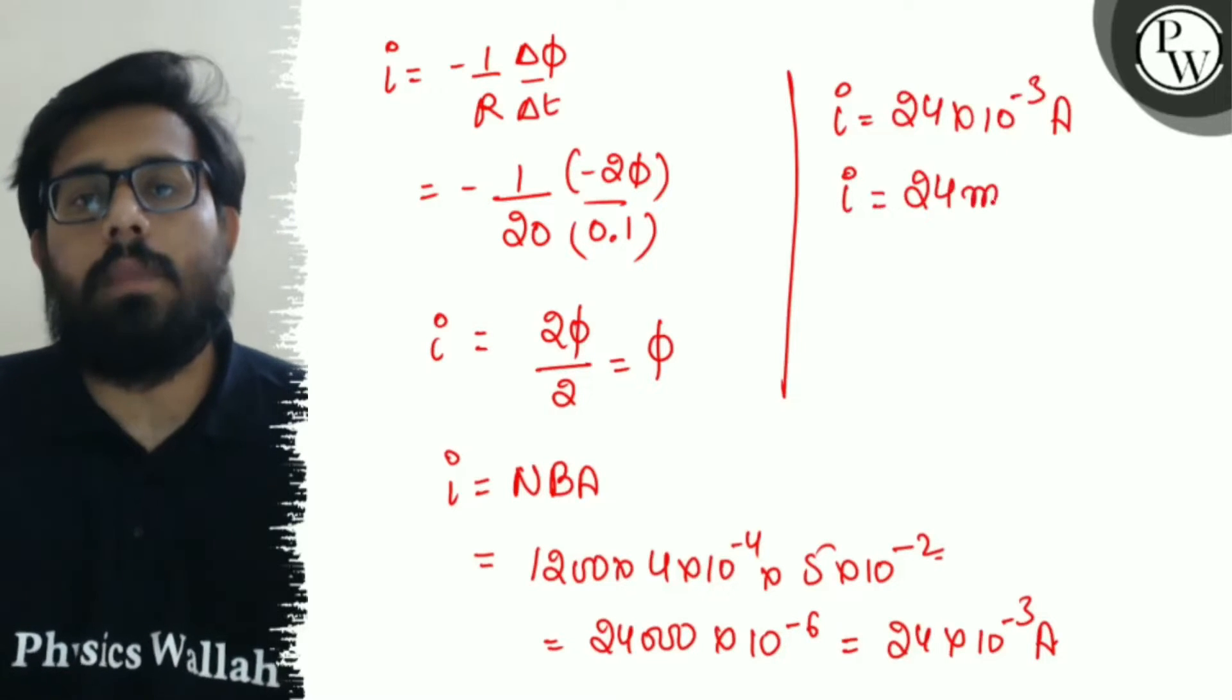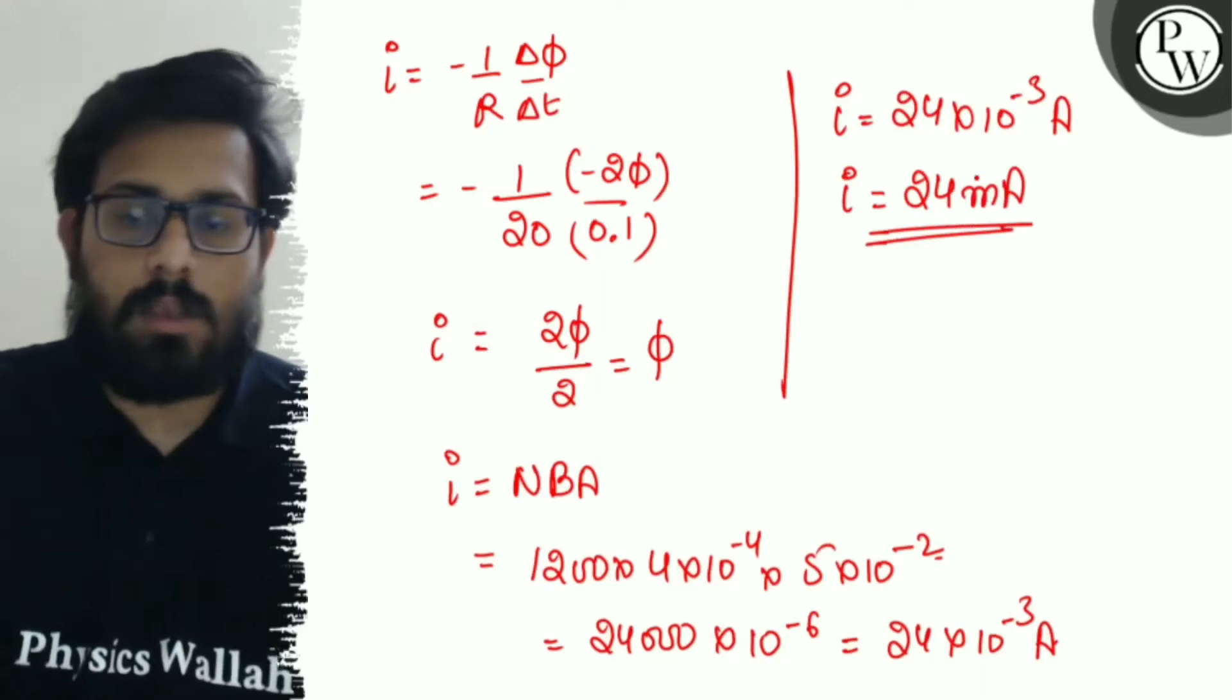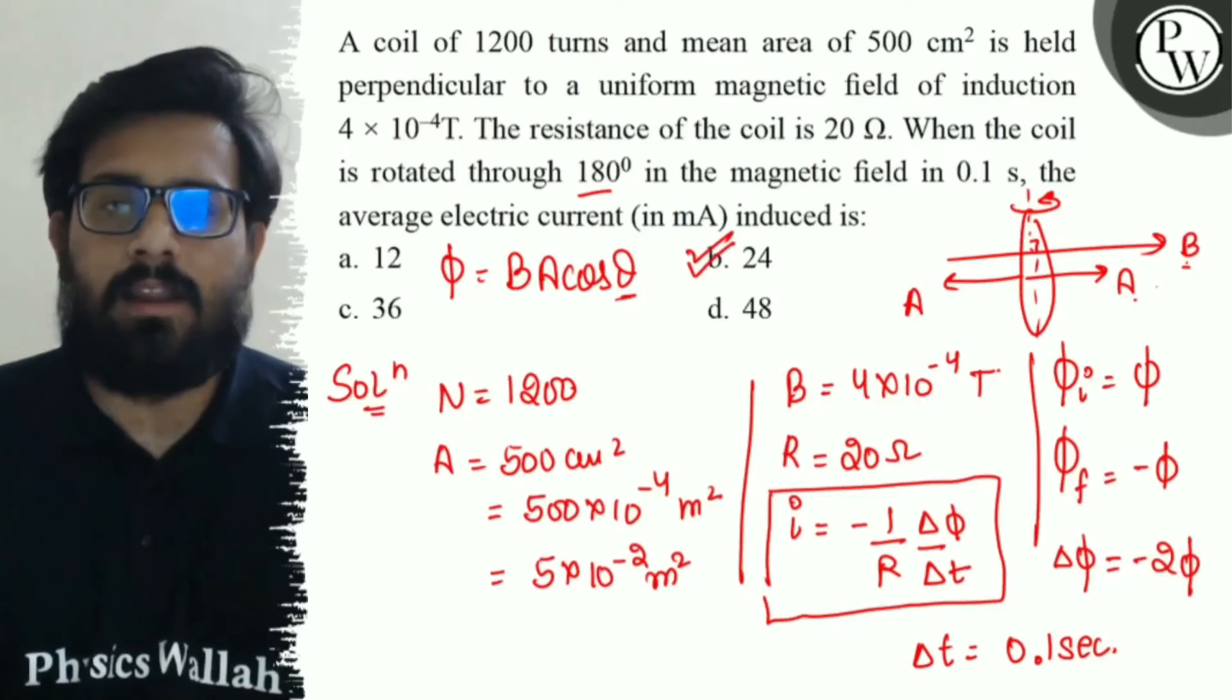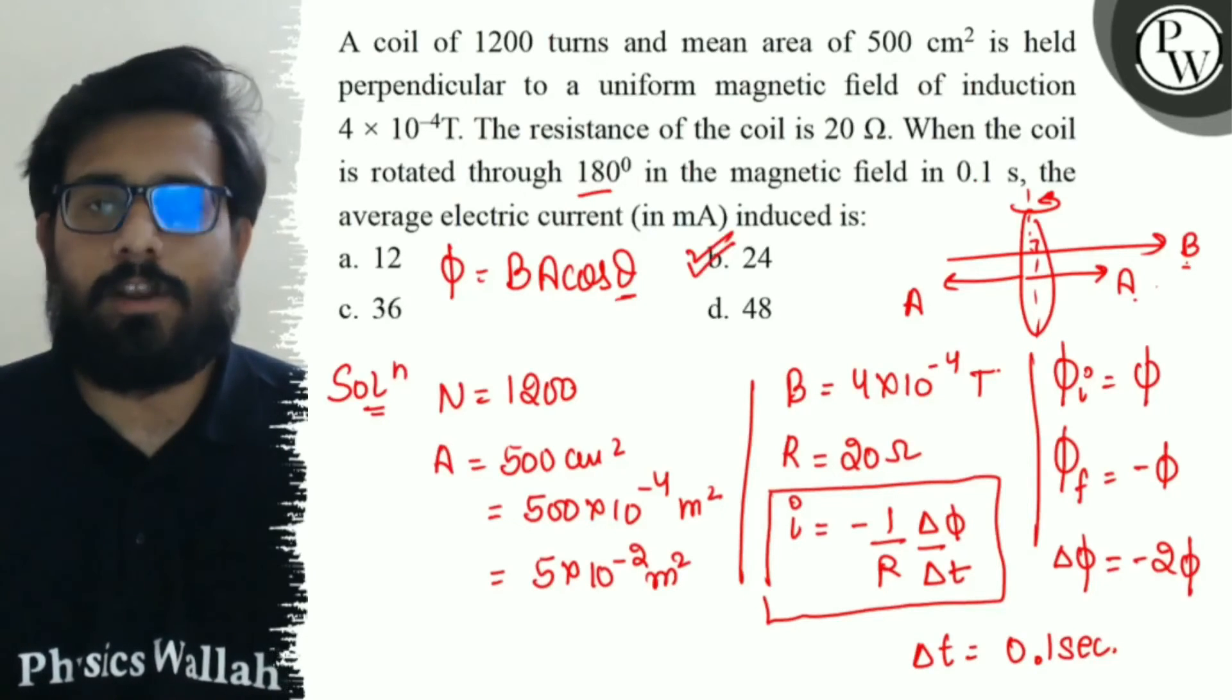The current is 24×10⁻³ A, which we can express as 24 milliamperes. So your answer is 24 milliamperes, which is option B. Your B option is absolutely correct. I hope you got the concept of this question. All the very best!